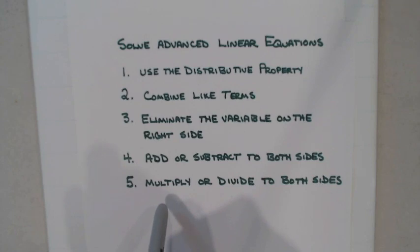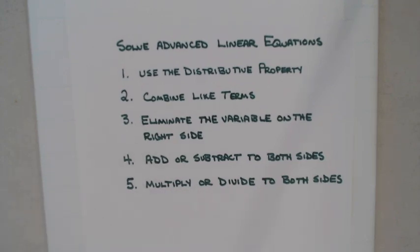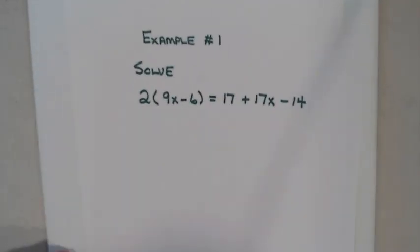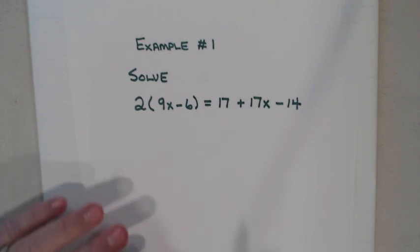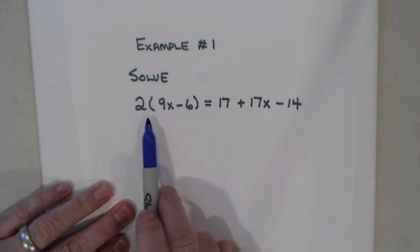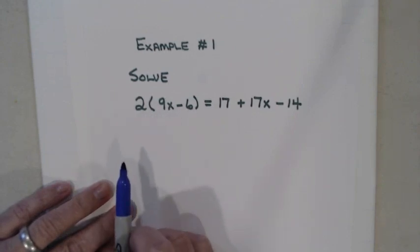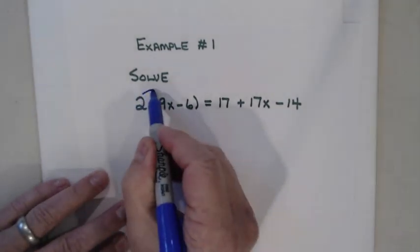This is a nice checklist when you start getting into more advanced equations. So let's look at an example. We need to go down our checklist and see which ones apply — maybe one or two, maybe all of them. The very first thing I look for in an equation is to see if it has parentheses. If it does, I need to use the distributive property first, so that's what we're going to do.